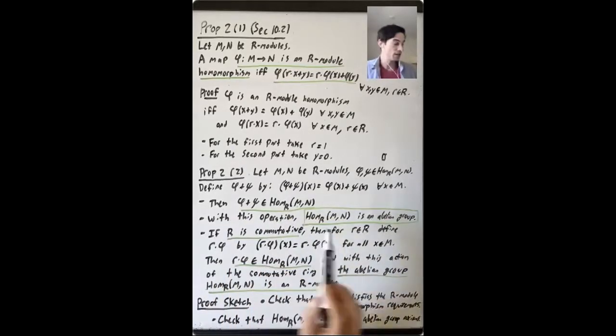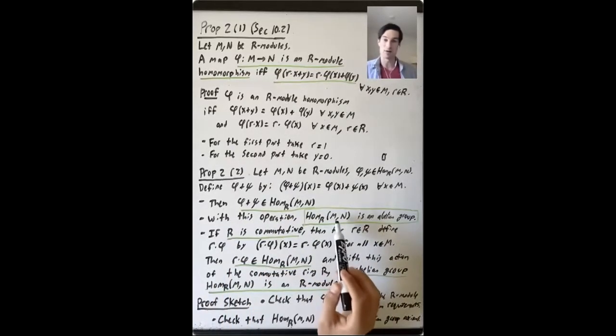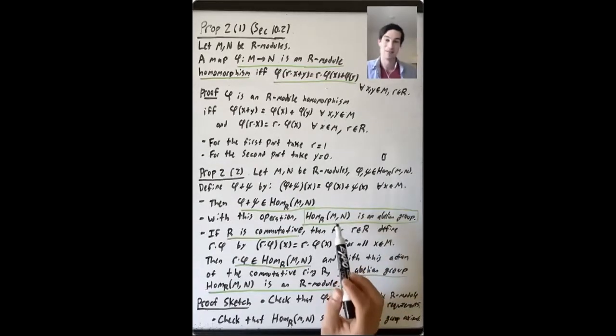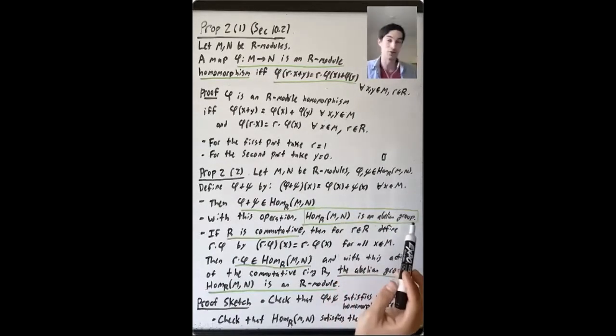With this operation, we claim that the set of R-module homomorphisms is not only a set, but it's an abelian group.